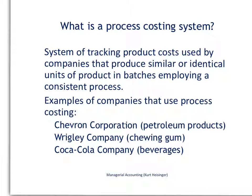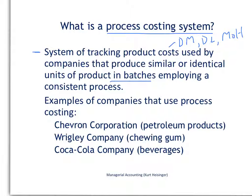Let's start by looking at a process costing system. A process costing system is a system of tracking product costs. Product costs are direct materials, direct labor, and manufacturing overhead, used by companies that produce similar or identical units of product in batches, employing a consistent process.